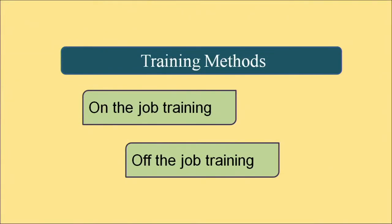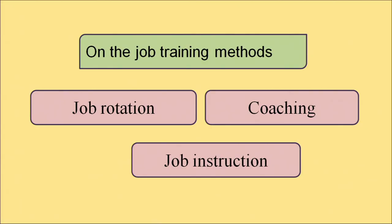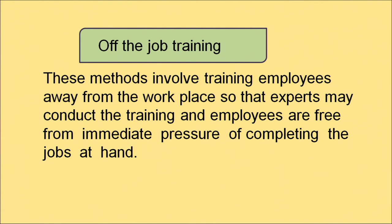There are two methods of training. Number one is on-the-job training, and number two is off-the-job training. In on-the-job training, employees learn about their jobs while doing the work, duly assisted by their supervisors or seniors. It encourages self-learning through practice. On-the-job training is given at the actual workplace and involves methods like job rotation, coaching, and job instruction.